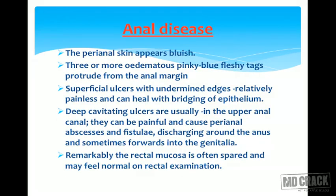Anal disease is very common in Crohn's. The perianal skin appears bluish. Three or more edematous pink-blue fleshy tags can protrude from the anal margin. Superficial ulcers with undermined edges are relatively painless and can heal with bridging of epithelium. Deep cavitating ulcers are seen in the upper anal canal, which can be painful and cause perianal abscess and fistula, discharging around the anus and sometimes forwards into the genitalia.